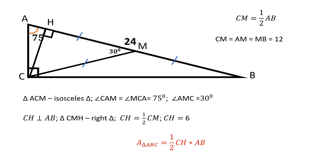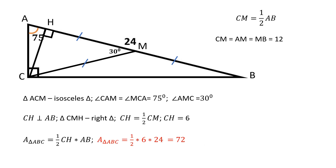The area of a triangle is equal to one half the product of its base and its altitude. The area of triangle ABC is equal to one half the product of CH and AB. The area of triangle ABC is equal to 72 square units.